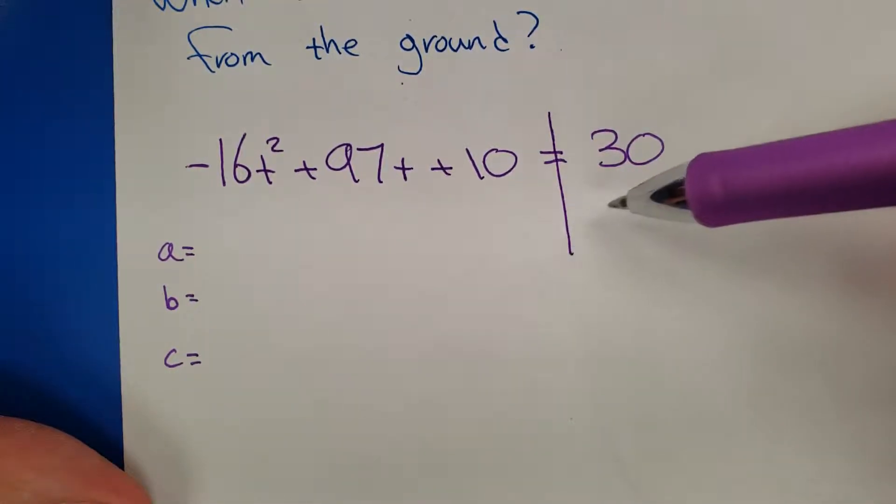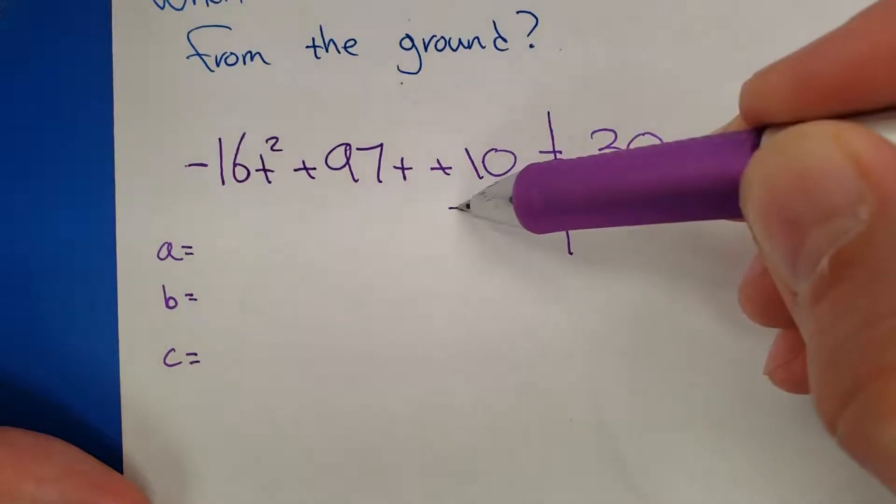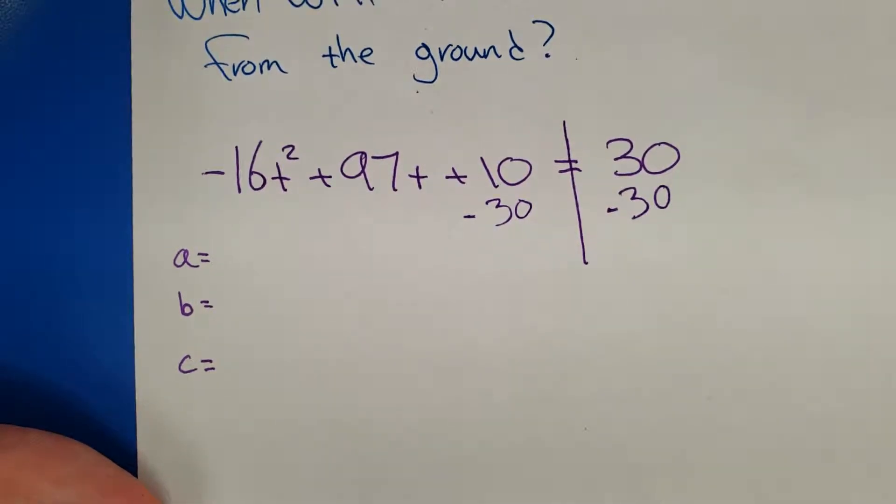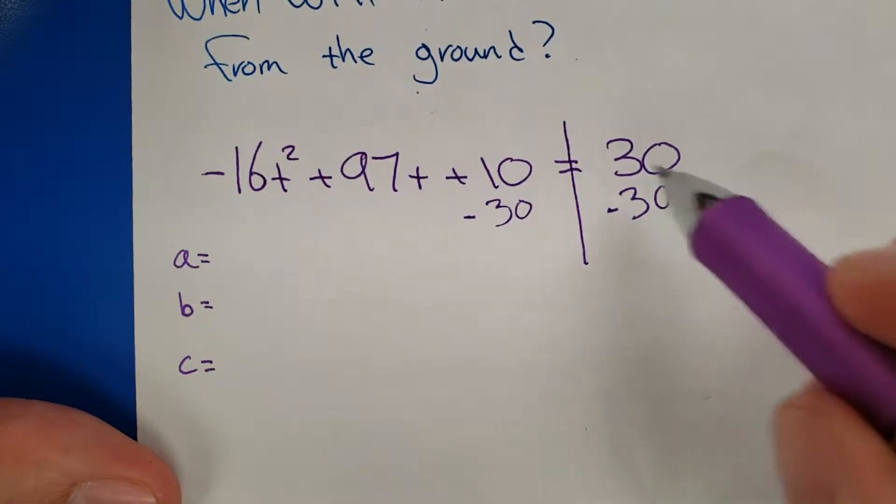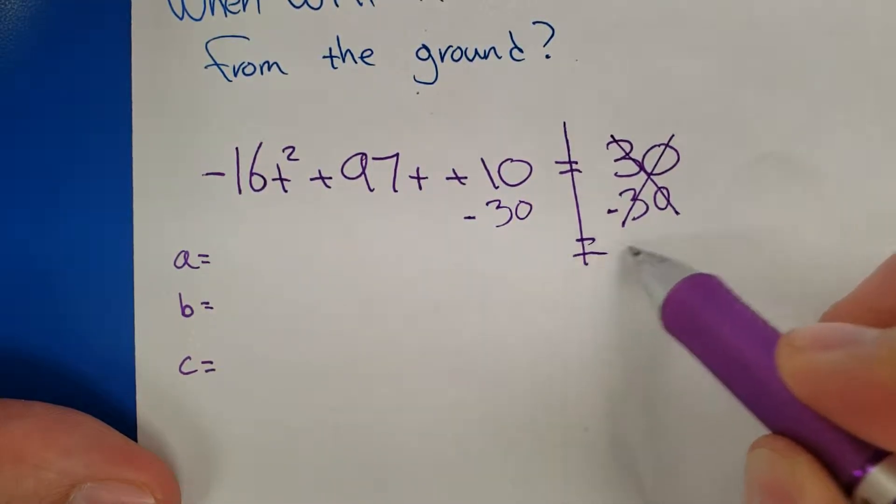So what happens is this. We can't do the quadratic equation until it's equal to 0. So guess what? Make it equal to 0. Boom.